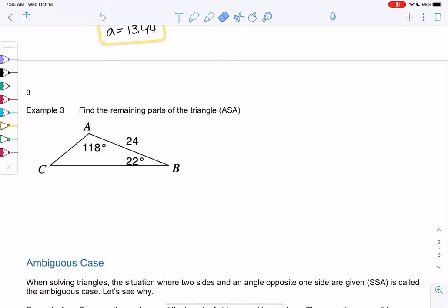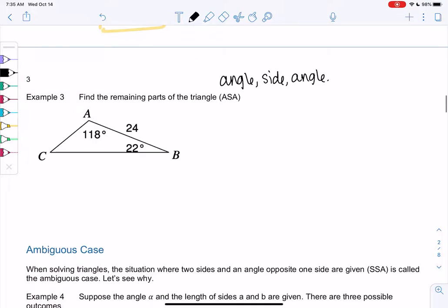The order will help us when we have more cases. We call this angle, side, angle because the side is in between. Again, it's one of the cases where we're allowed to use law of sines. Let's find the third angle: 180 minus 118 minus 22, I got 40 degrees.